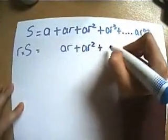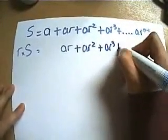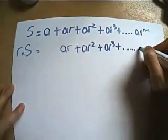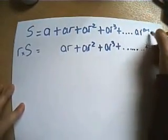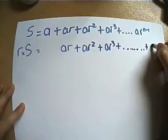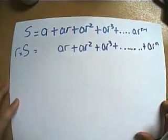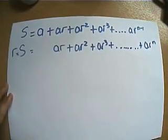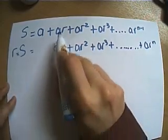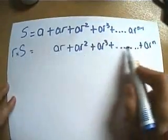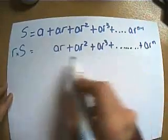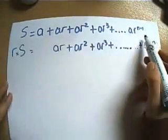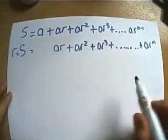ar squared multiplied by another r becomes ar cubed, and so on and so on until we get to this term which, when you multiply it by another r, becomes ar to the n. Now you're probably thinking, okay, what's this got to do with it? Well, can you see, because we've now got an ar and an ar squared and an ar cubed and so on in every, in both lines.